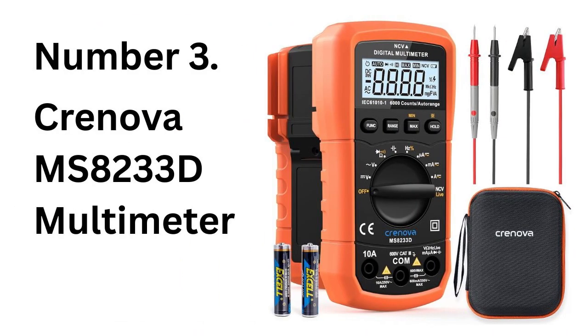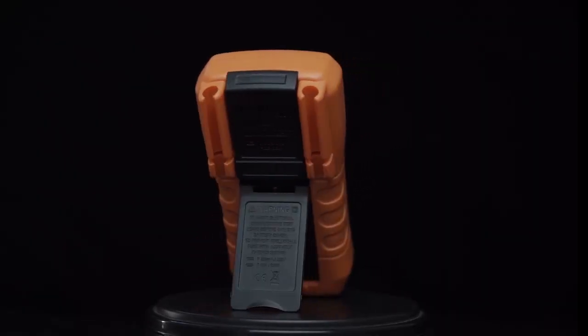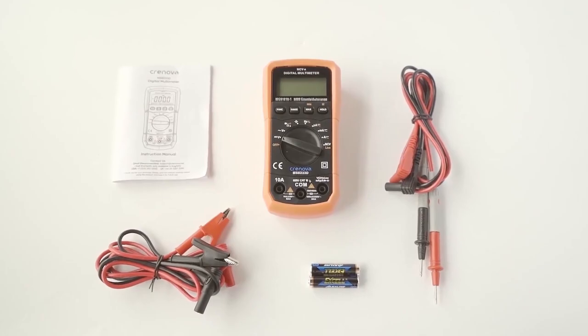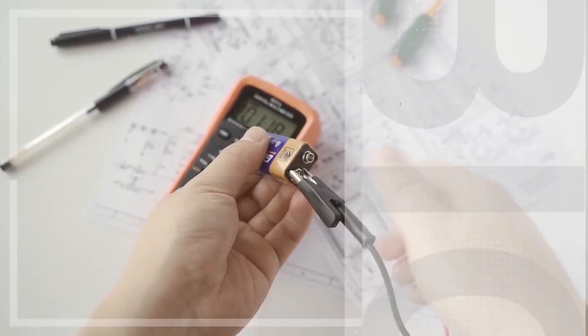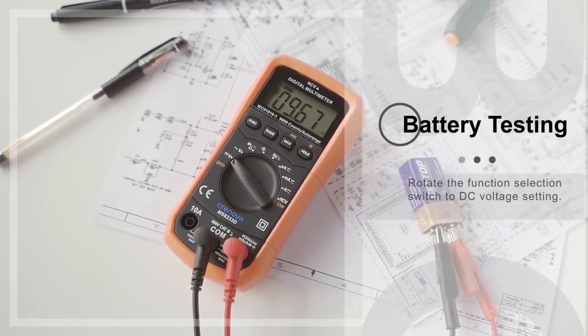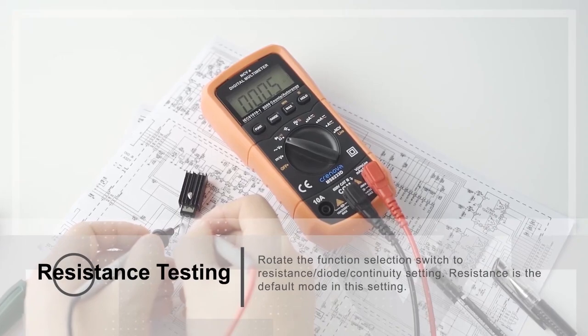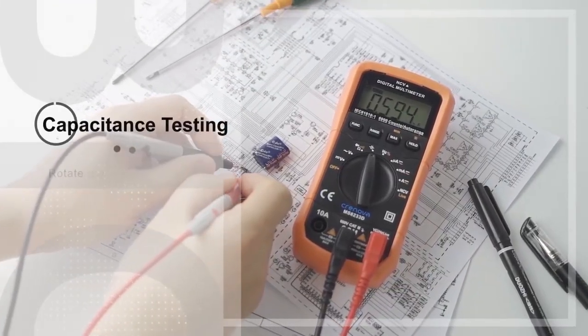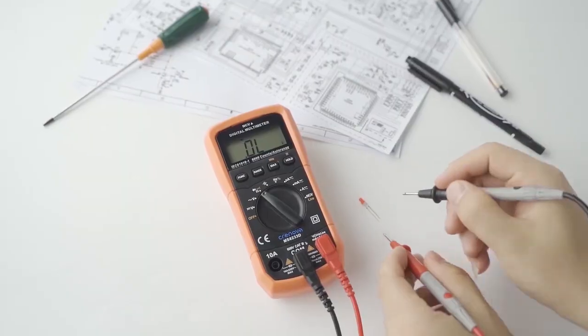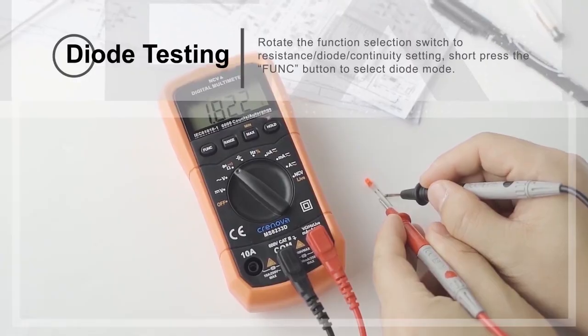Number 3. Cronova MS8233D Multimeter. The Cronova MS8233D is an excellent multimeter for beginners, DIYers, and homeowners tackling small electrical projects without needing a contractor. Affordable yet feature-packed, it measures resistance, AC-DC voltage and current, frequency, capacitance, and live wires without probes. It includes continuity and diode tests, plus convenient features like a backlight, hold, and max functions.